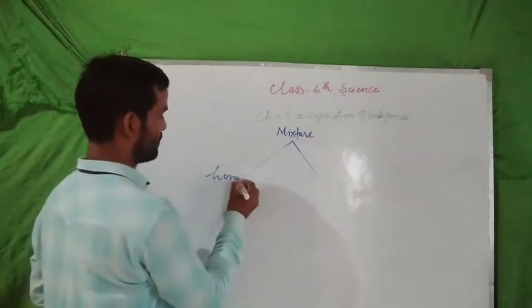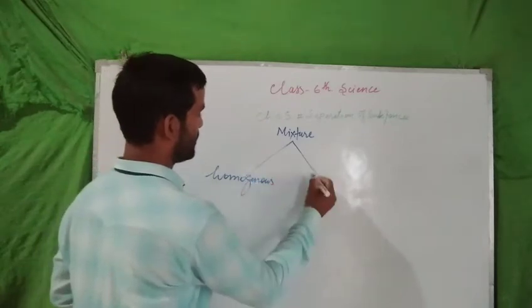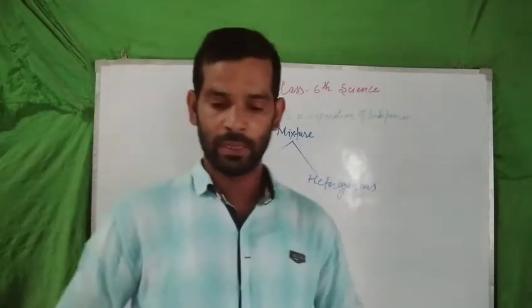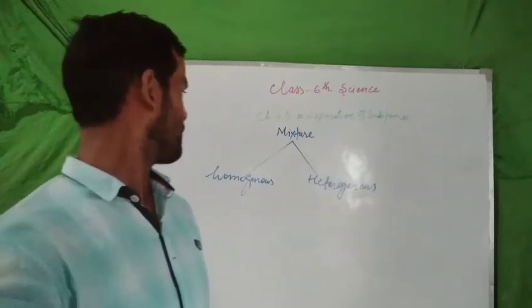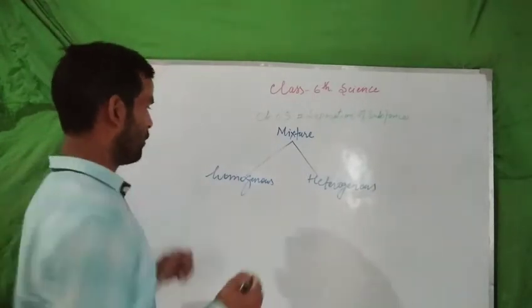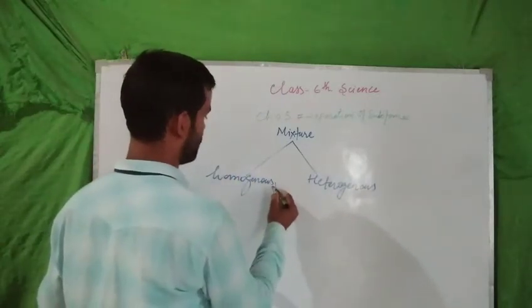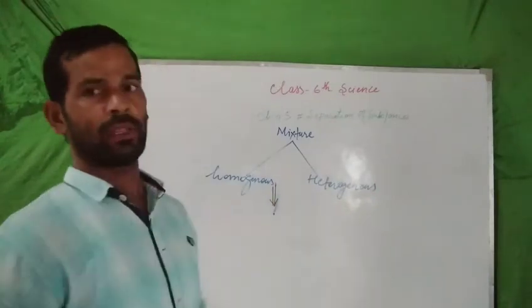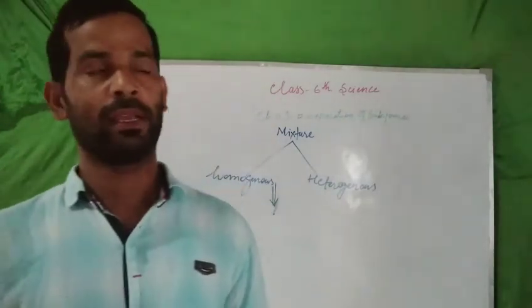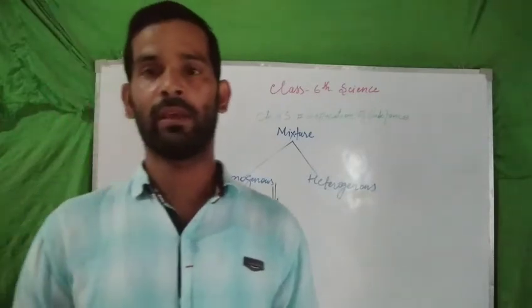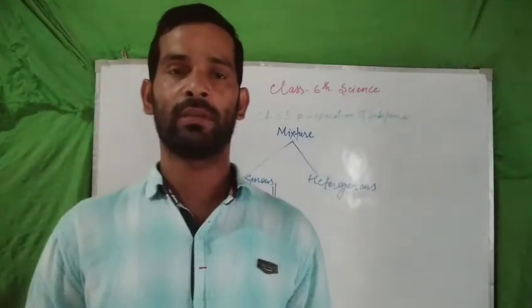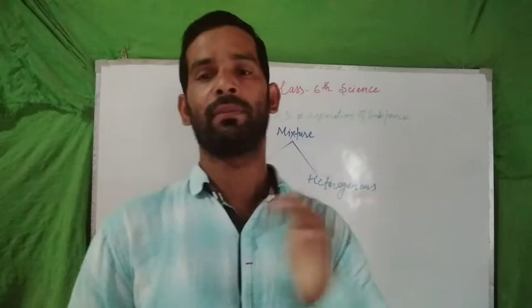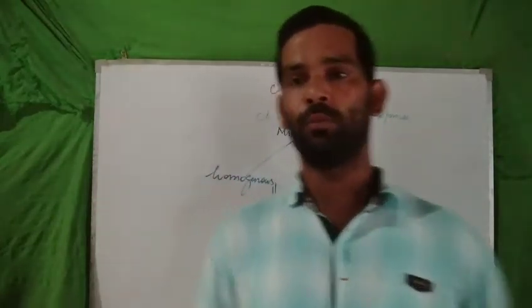The two types of mixture are: first, homogeneous, and second, heterogeneous. Homogeneous means when the same kind of particles are found in a particular material, then it is called homogeneous. In the case of a homogeneous mixture, the particles are similar — the same kind.